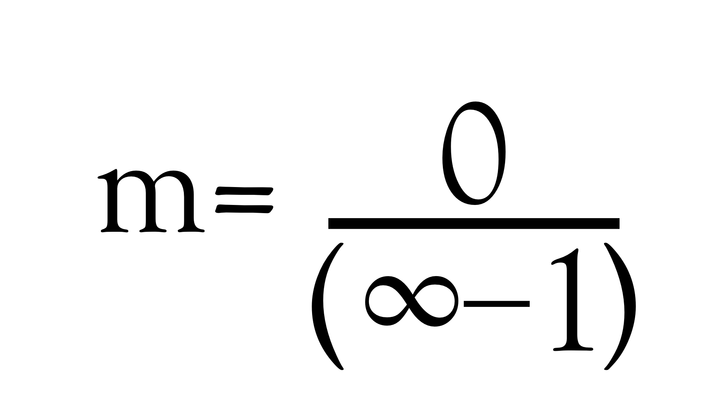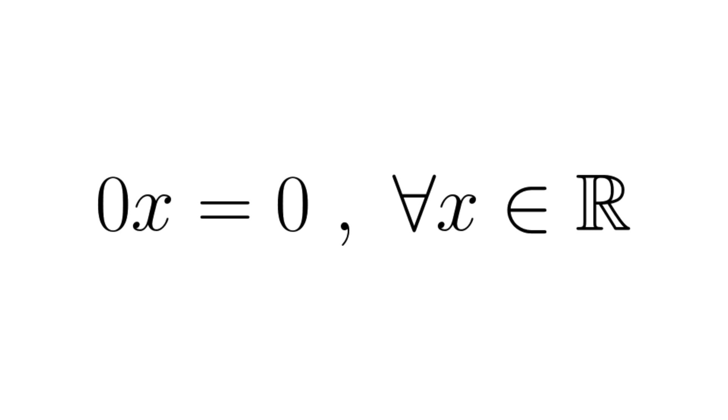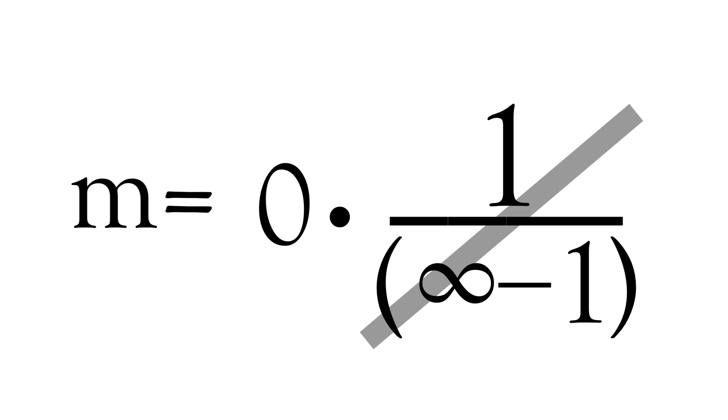This can be split into zero multiplied by one over infinity minus one. Finally, zero is defined such that zero times x equals zero for all x, including x equals one over infinity minus one.